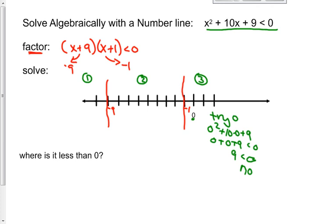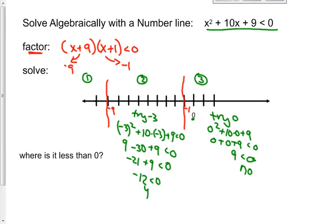Now I need to move into the middle section. I need to pick some number between -1 and -9. Let's pick -3. I need to put -3 into my inequality and see if I get a true sentence. (-3)² + 10(-3) + 9 < 0? 9 - 30 + 9 < 0? -21 + 9 < 0? -12 < 0? That answer is yes.